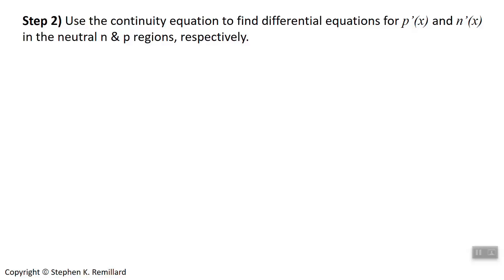When I say in the neutral N and P regions, what I mean is outside of the depletion region. So the excess hole concentration outside the depletion region on the N side and the excess electron concentration outside the depletion region on the P side. We're talking about minorities.